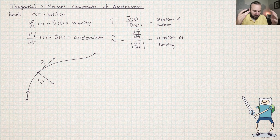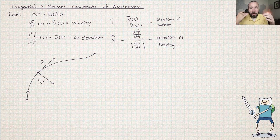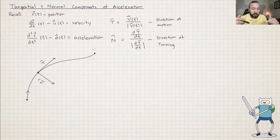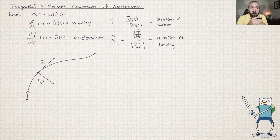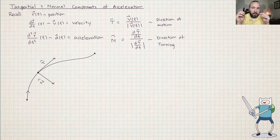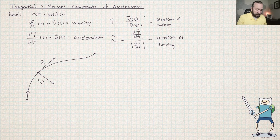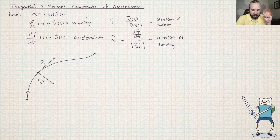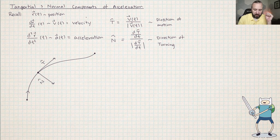Let's go over the basic letters we use when describing motion in space. R of T represents the position of the particle. The first derivative of R represents the velocity of the particle. The second derivative of R represents the acceleration of the particle. If you take the velocity and scale it down by the magnitude of velocity, that gives you T-hat, the unit tangent vector — the direction that the particle is moving in.